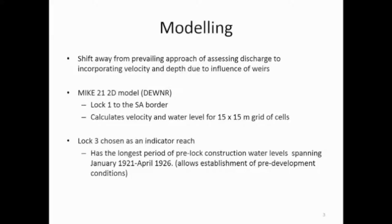We couldn't do the whole thing because it takes a long time to run these models. We just chose one particular reach, between Lock 3 and Lock 4. The main reason we chose that is it's got the longest period of information about the water level at the downstream end before the lock was put in. That's important because the way the model works is you have to set what the height of the water at the downstream end is and what the flow is at the upstream end, and it works out what happens in between.